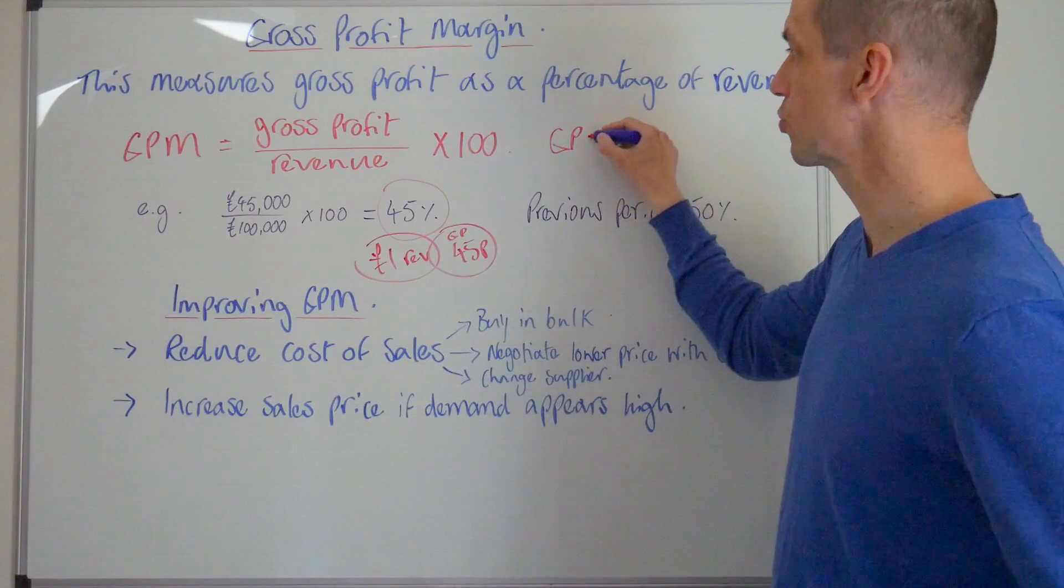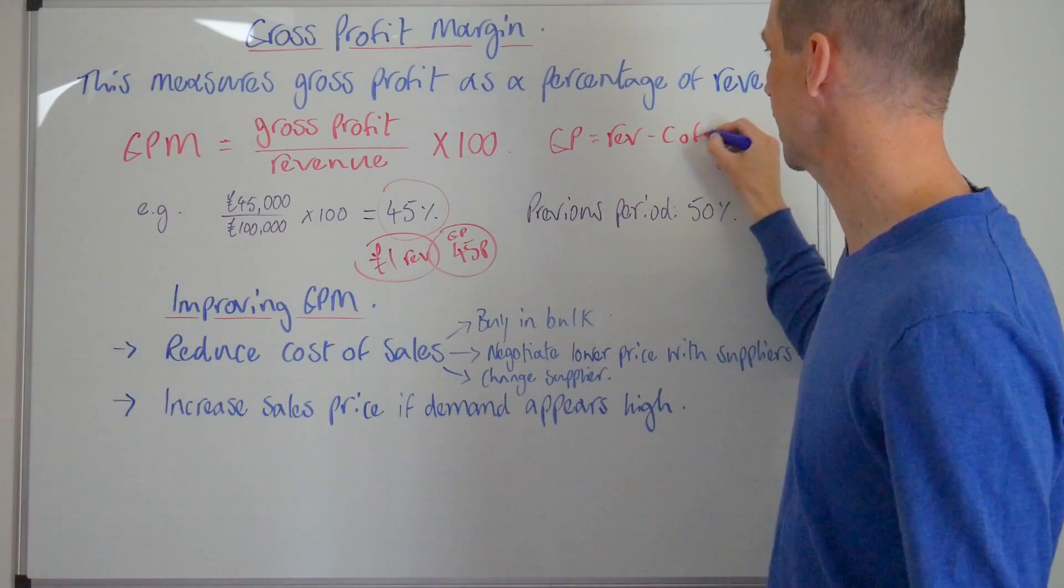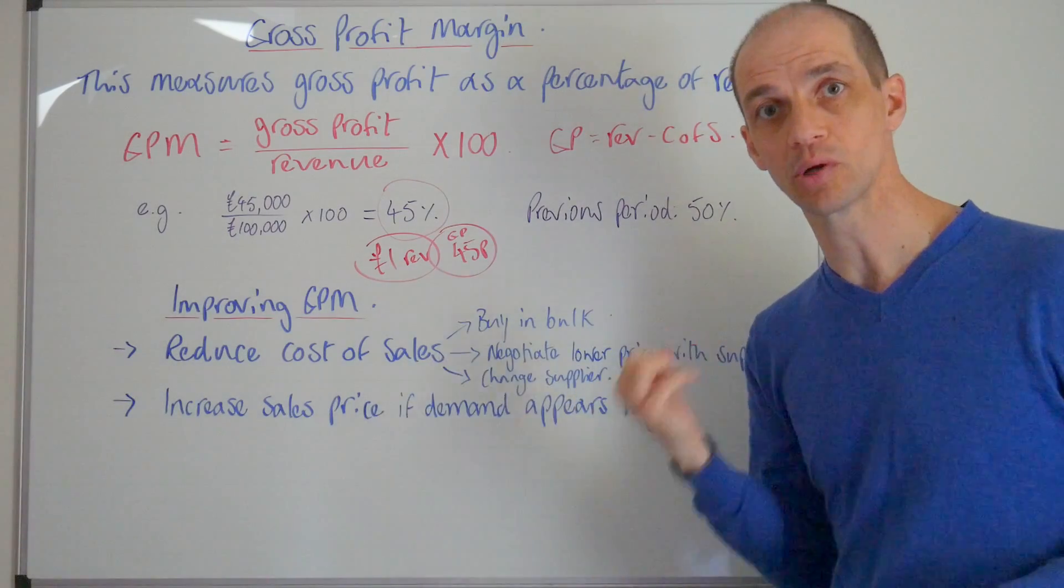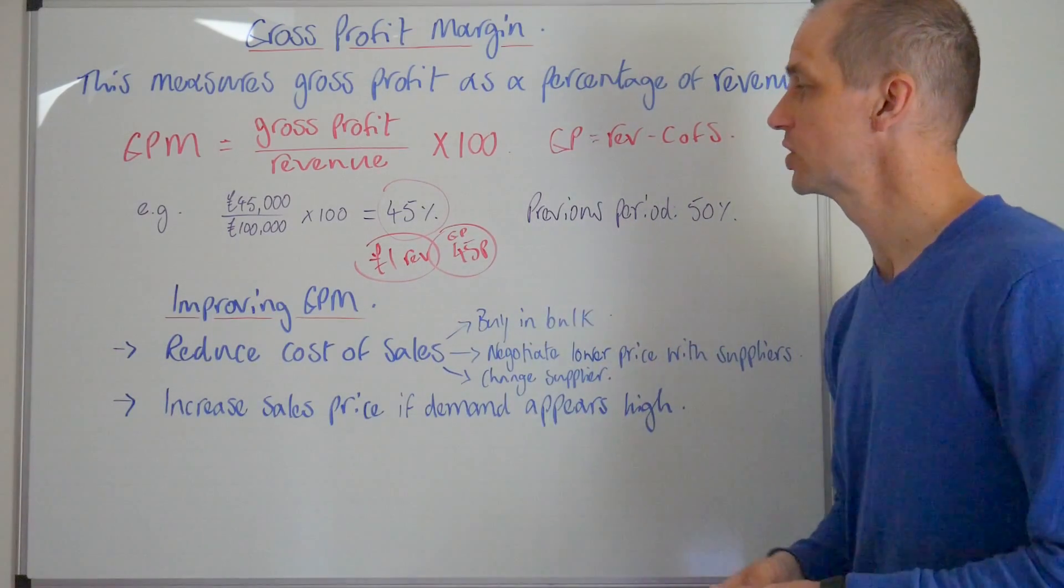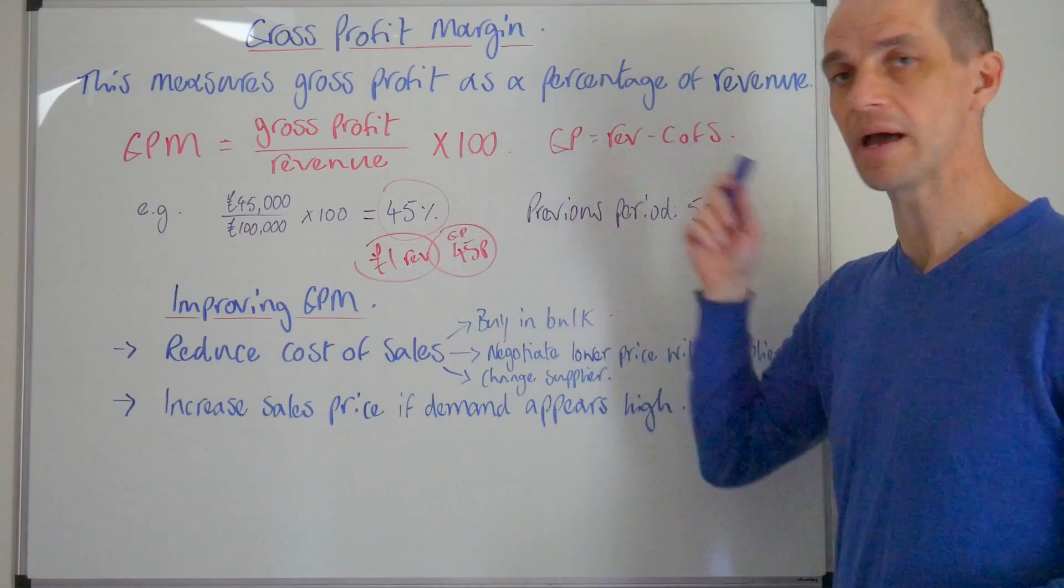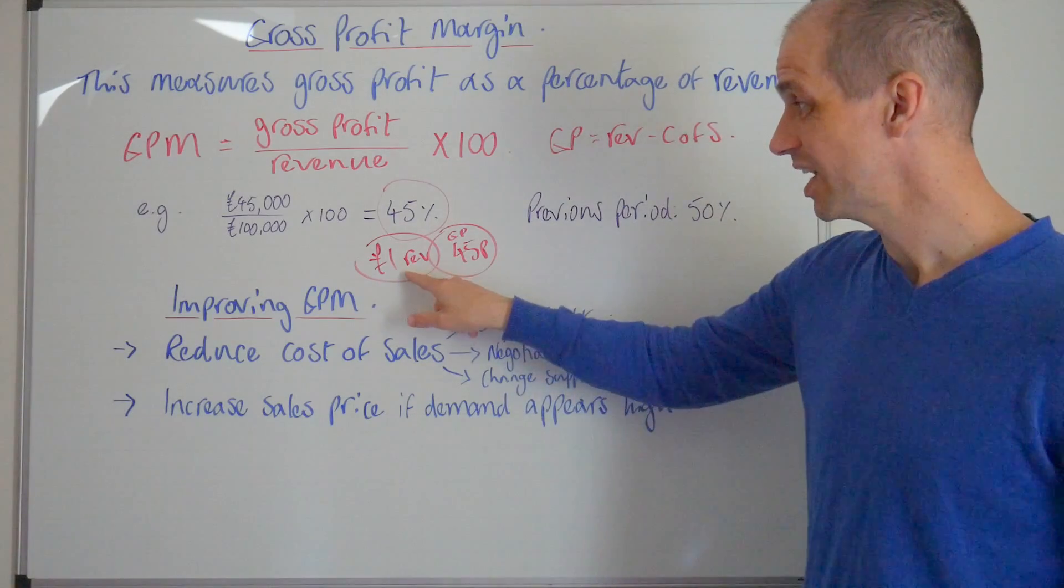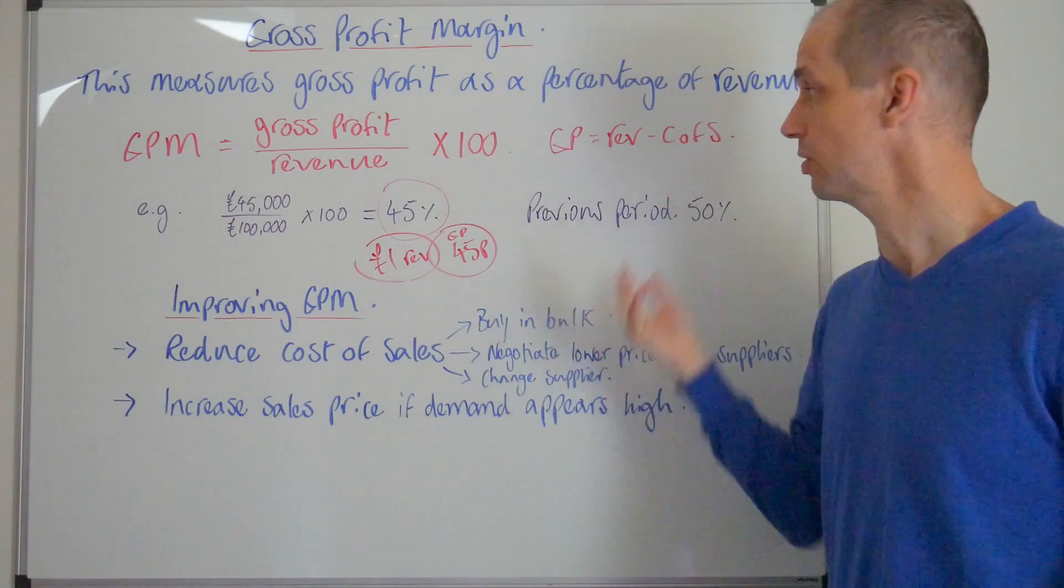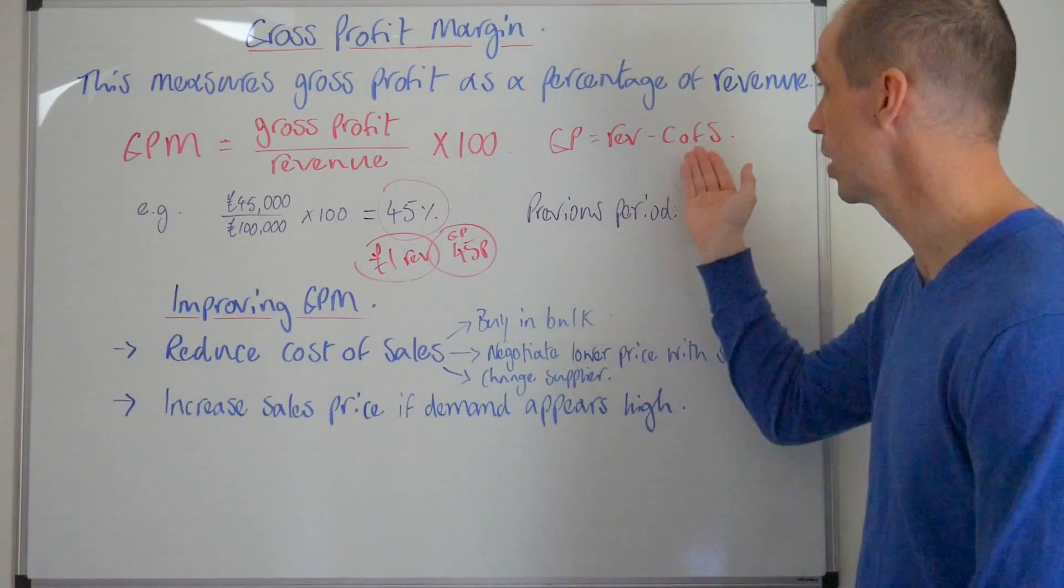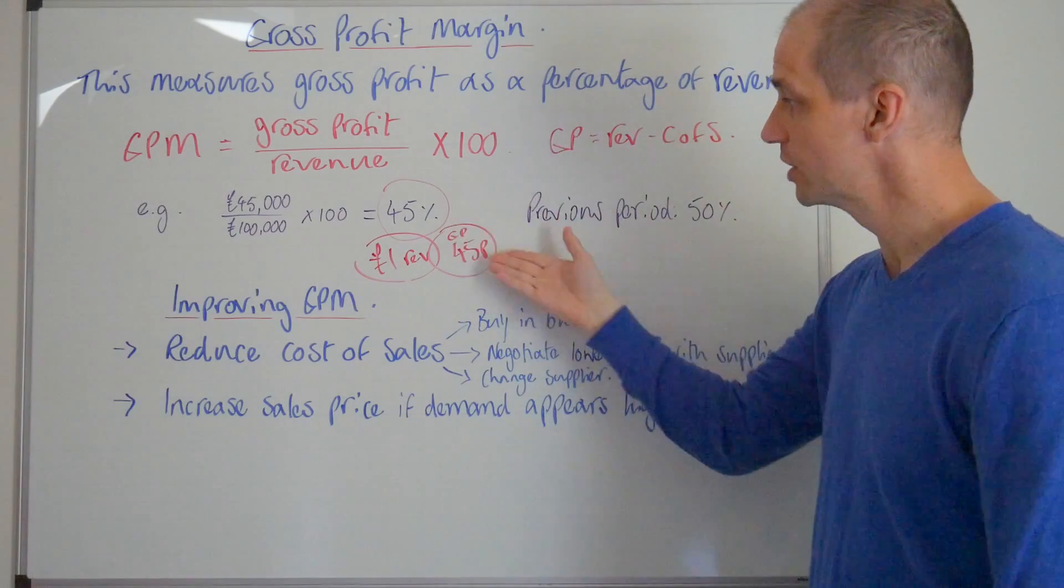Just think about what this really helps us to understand. Gross profit equals revenue minus the cost of sales. That is your direct costs from buying raw materials and stock into the business. We've got 45% as an outcome here. What does that mean it's actually being spent on our cost of sales? Well clearly it's the remainder of that pound, so it's 55p out of every pound going to pay your suppliers in direct costs there.